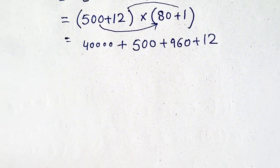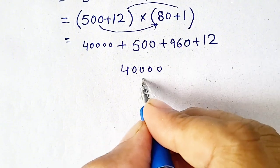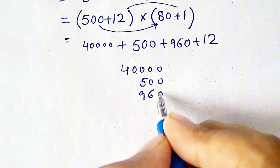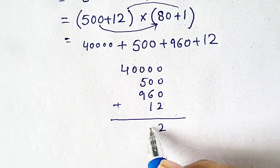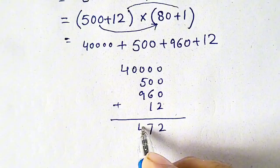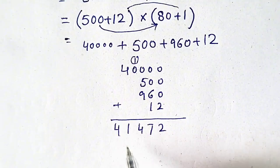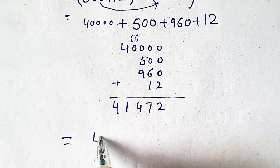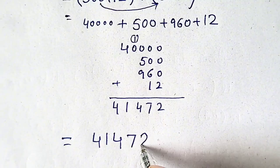Now we add these 4 numbers: 40,000, 500, 960, and 12. So we will get 2. 6 plus 1 is 7. 9 plus 1 equals 10, then 5 plus 0 is 5, then 0 plus 4 is 4. So our answer will be equal to 41,472.